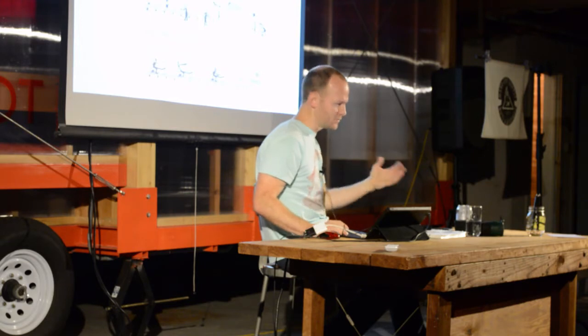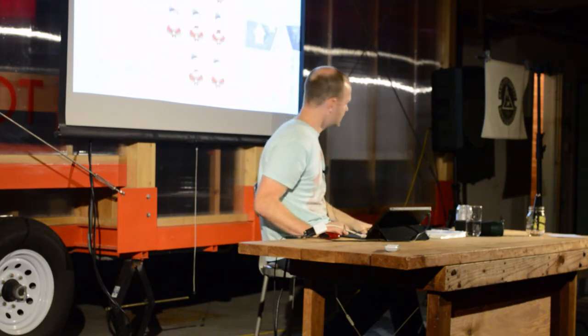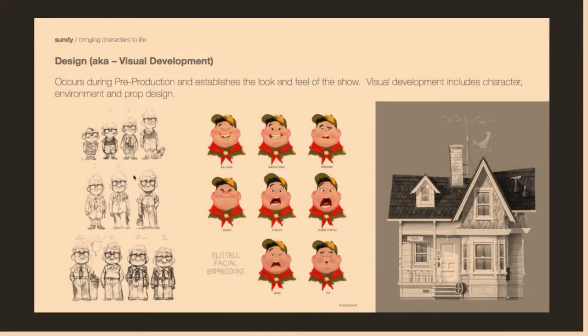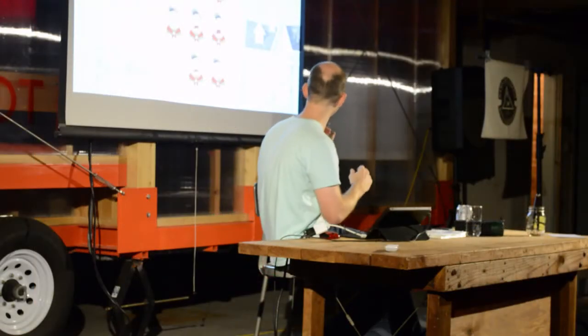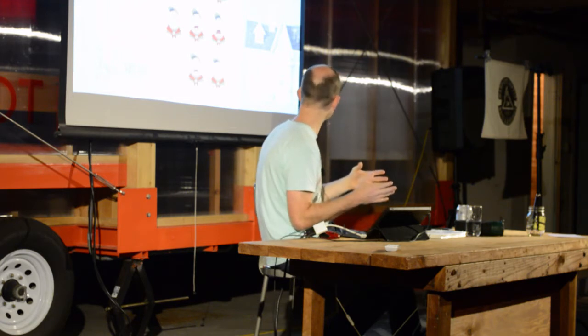I told him I love characters and drawing faces, and he said great — you want to be in that design phase. He explained what visual development does: it occurs during pre-production and establishes the look and feel of the show, including character design, set design, environment design, and prop design. So for Up, for instance — coming up with Russell and what he looks like, or Carl or the house — these were all designed by artists before they ever became the final computer model rendered in a film.